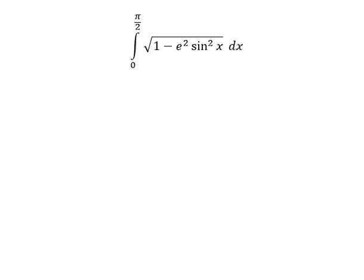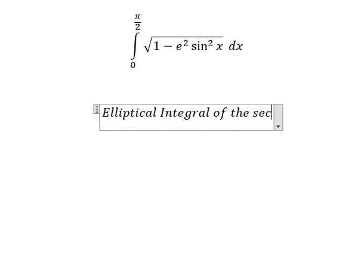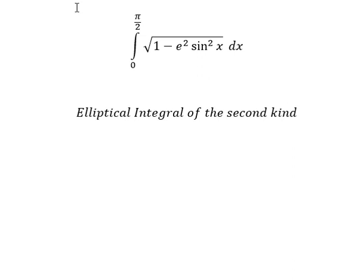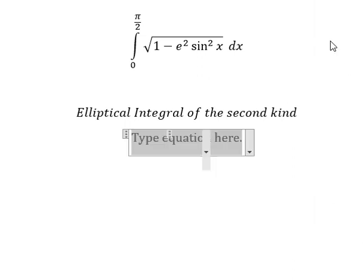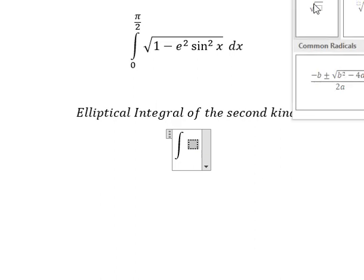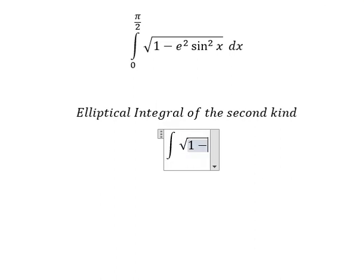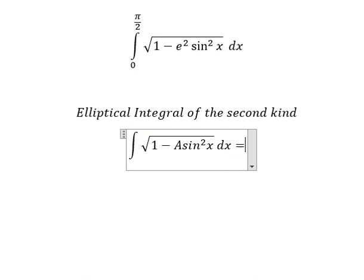We can use elliptical integrals of the second kind. So in this one we have the formula, the integration of this one: E(x|A) plus C.